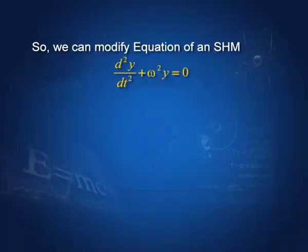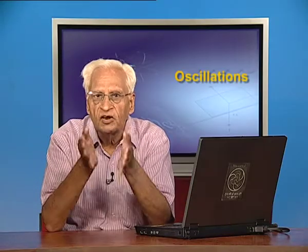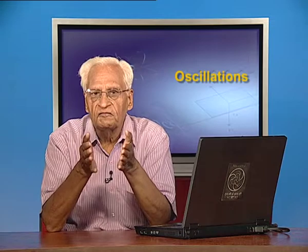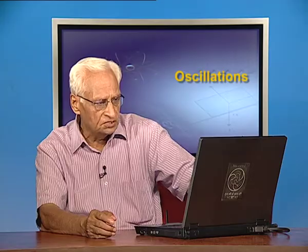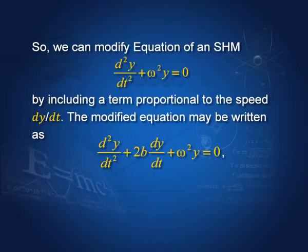The equation of simple harmonic motion is d²y/dt² + ω²y = 0. For small velocities, the frictional forces are proportional to velocity itself. Therefore, we introduce a term containing velocity. This equation is modified for the damping case to d²y/dt² + 2b·dy/dt + ω²y = 0.